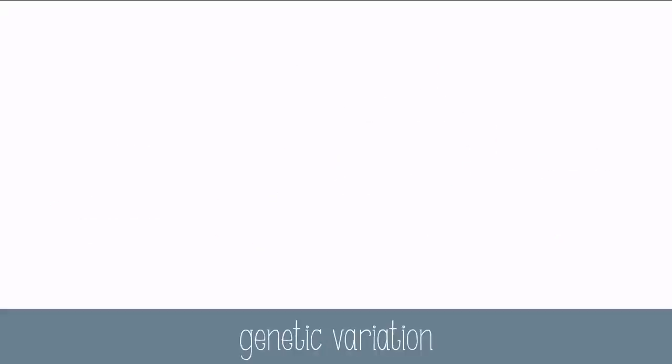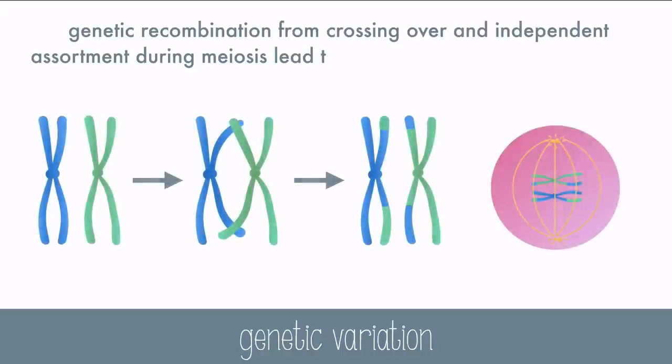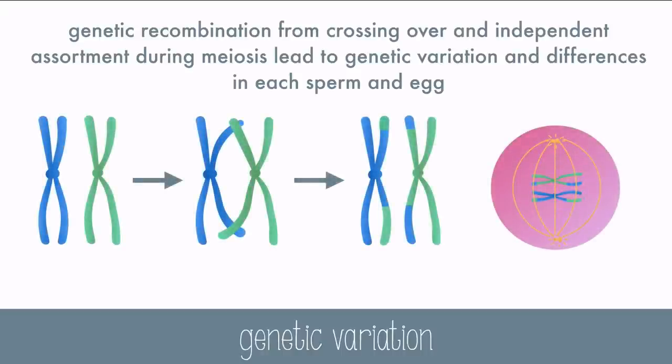Not every cell created by one individual is the same. In fact, they're all very different. Genetic recombination from crossing over and independent assortment during meiosis lead to genetic variation and differences in each sperm and egg. This is why brothers and sisters don't all look identical.